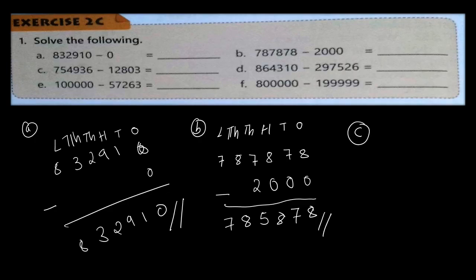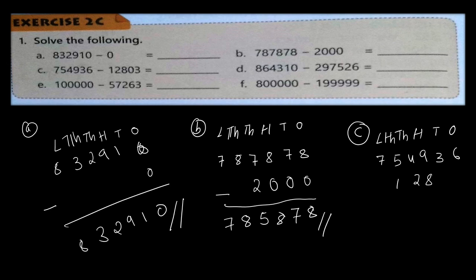For number C: six digits — ones, tens, hundreds, thousands, ten thousands, and lakhs. The numbers are 7, 5, 4, 9, 3, 6. The second number has five digits, so we start from ten thousands: 1, 2 — 8, 6 minus 3 is 3, 3 minus 6 is 3, 3 minus 0 is 3, 8 minus 3 is 8.